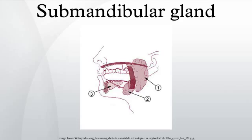Secretory activity via the submandibular duct begins at 16 weeks. Growth of the submandibular gland continues after birth with the formation of more acini. Lateral to both sides of the tongue, a linear groove develops and closes over to form the submandibular duct.